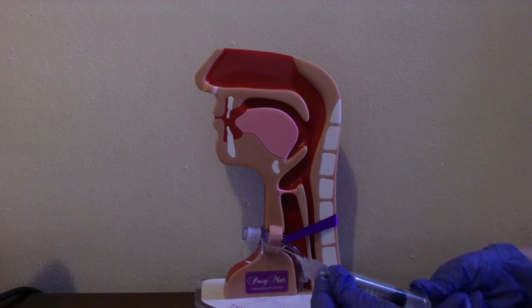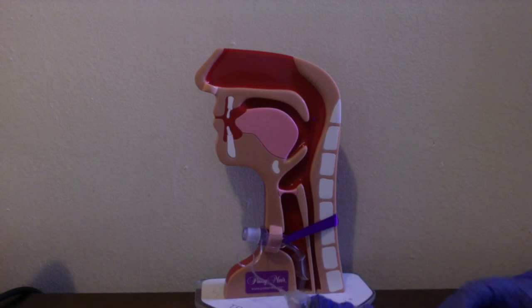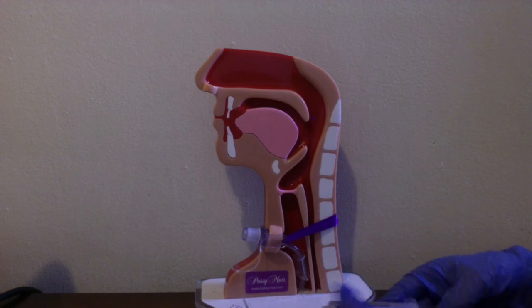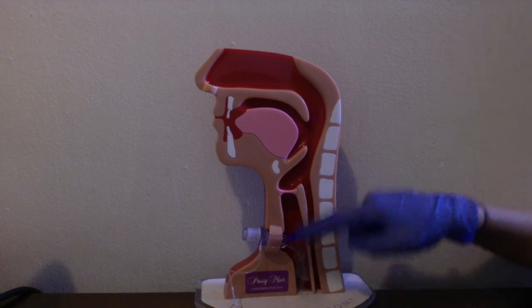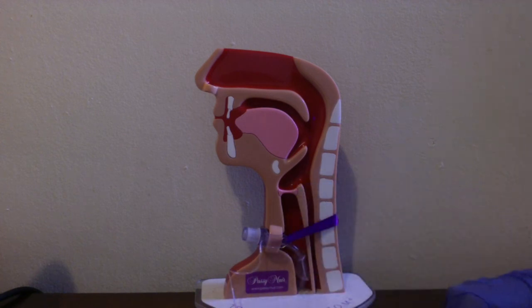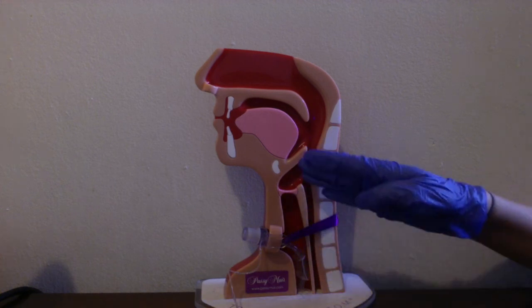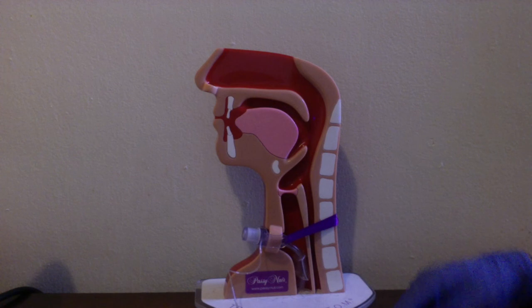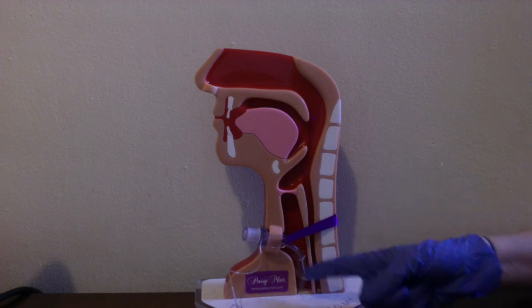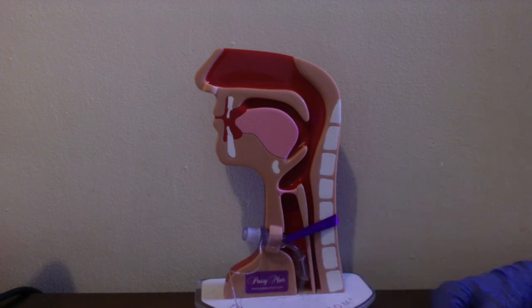Once the cuff is fully deflated, the patient will not only be able to breathe in and out through the tracheostomy tube, they will now be able to breathe through that upper airway as well. Airflow will take the path of least resistance, so some of the air will come up through the vocal cords to produce voice and possibly improve swallowing, and some of the air will still flow out through the tracheostomy tube.